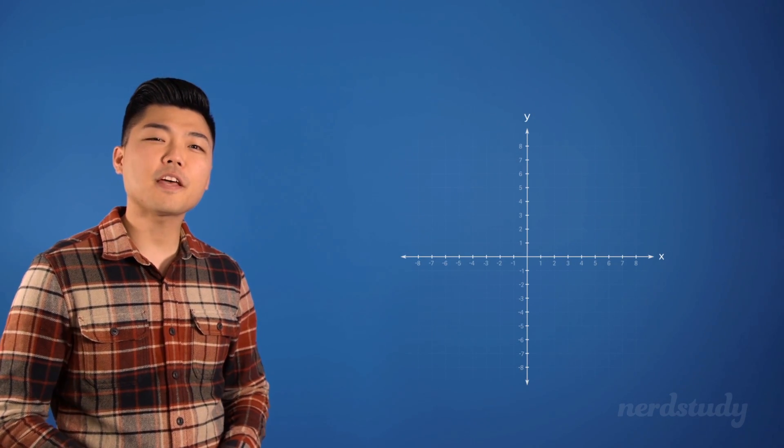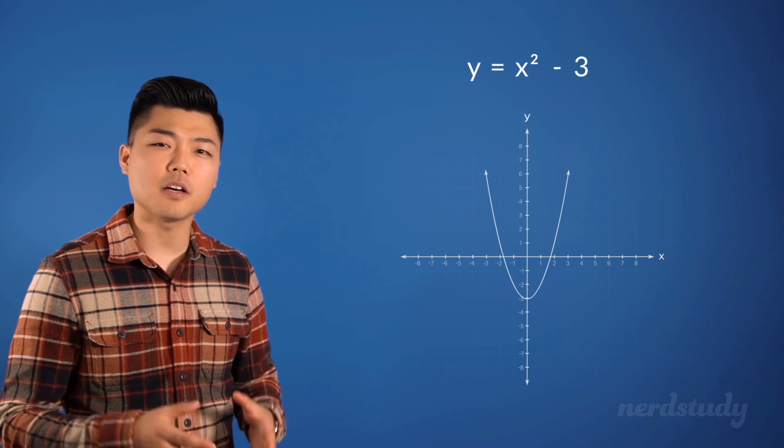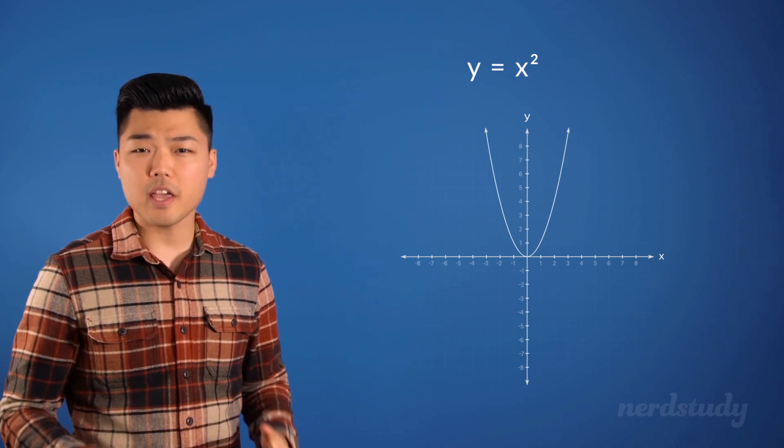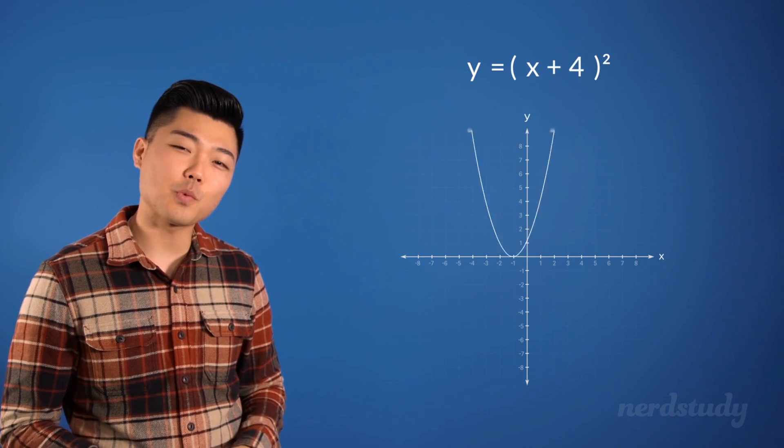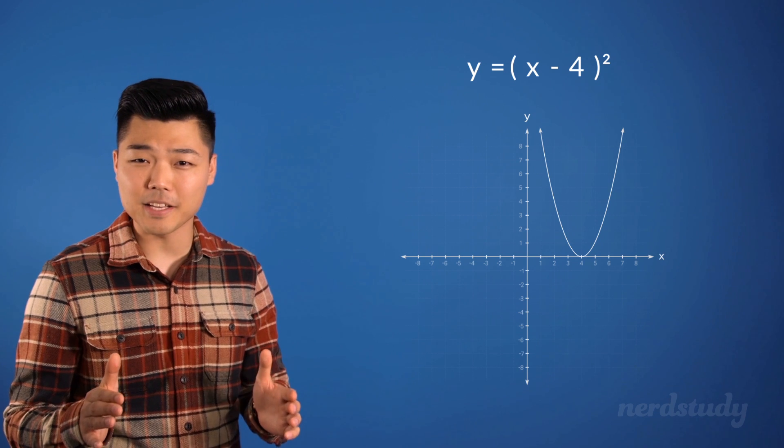So far we've looked at how the graph changes when we added or subtracted a number to the end of a quadratic relation and we've looked at what happens when we added or subtracted a number on the inside of the brackets.